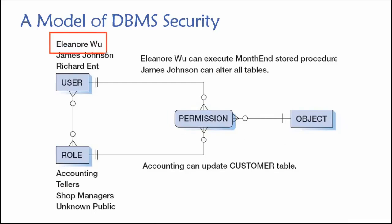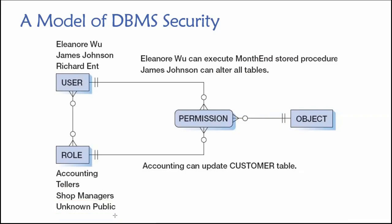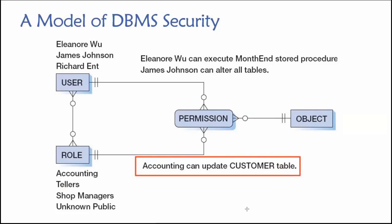It is these permissions that define which objects the user or members of a role are allowed to access. For example, we might have users like Eleanor Wu or Richard Ent. We can have roles that we define ourselves — like an accounting employees role — or if we're a bank, maybe bank tellers and managers with higher-level privileges. If you're running a data-driven website, you may have an unknown public role; they need access to certain things even though they're just a random unknown person on the internet. If you navigate to Amazon or Wikipedia and do a search, there needs to be a way for your request to be processed by the database, so we set up an unknown public role or user account and grant that account certain — hopefully very limited — privileges.